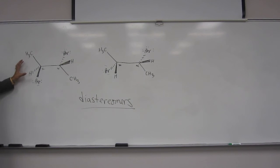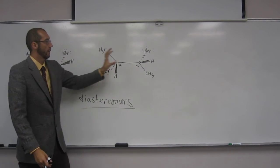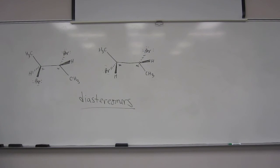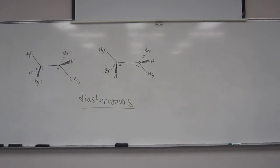Okay, so same, same, different, different. So if one of them's the same and one of them's different, or if some of them are the same and some of them are different, then they're diastereomers. Okay. If they're all different, then they're enantiomers. If they're all the same, what are they? The same molecules. They're the identical molecules.